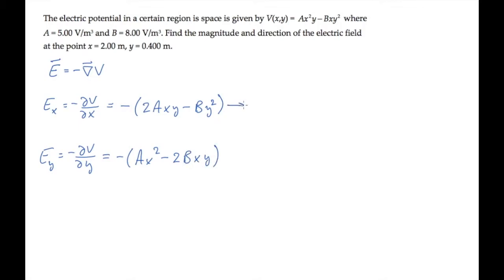Now we can evaluate these expressions at the location we were given, where x equals 2 meters and y equals 0.4 meters. This gives us an x component shown here and a y component after substituting and calculating of this value.